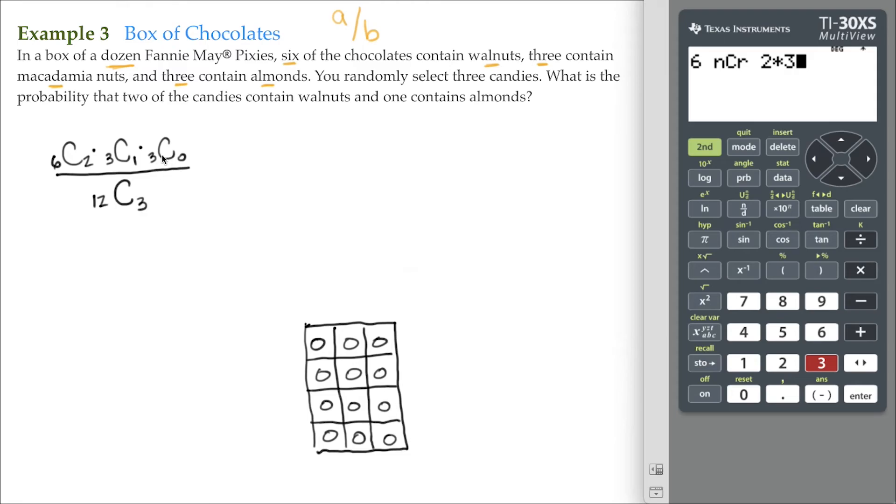Then 3 choose 0—that's 1. I'm not going to multiply by 1. I'm just going to leave it like this and hit enter. If I divide now by my sample space, by B, if I hit one of the operators here, it's going to give me this ANS. ANS stands for the last answer.